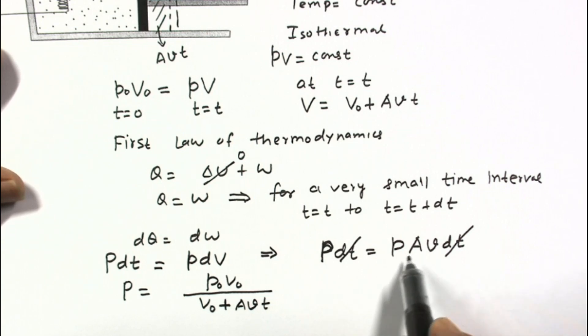So this is P0 V0 divided by V0 plus AVT. Now this term is here A into V. So this is the power as function of time.